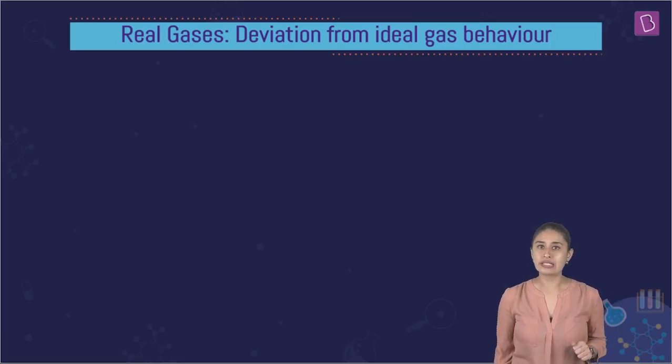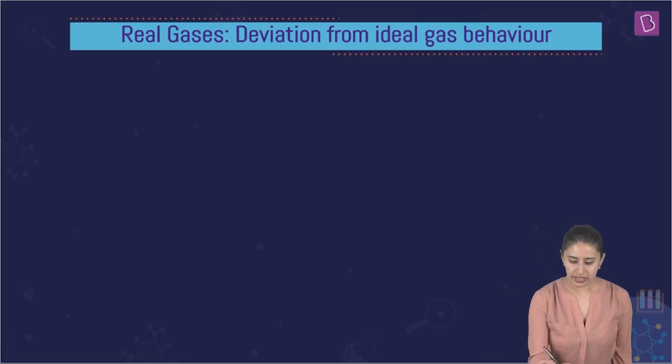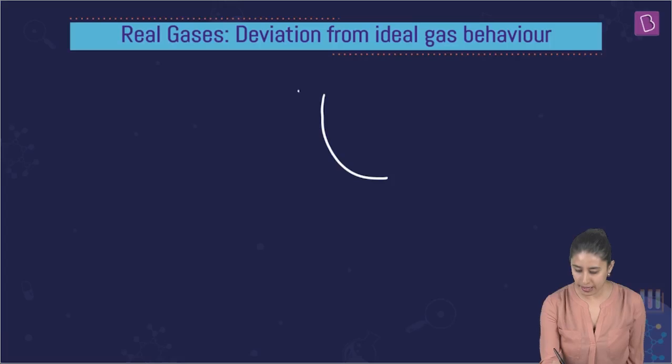What we did is we plotted a curve between P and V keeping the temperature constant. Which law? When I'm talking about temperature constant, I'm sure Boyle's law strikes your mind. So we know that when we plot for an ideal gas, the PV curve at a constant temperature, we get a rectangular hyperbola for an ideal gas.